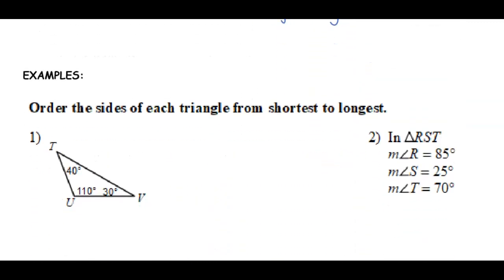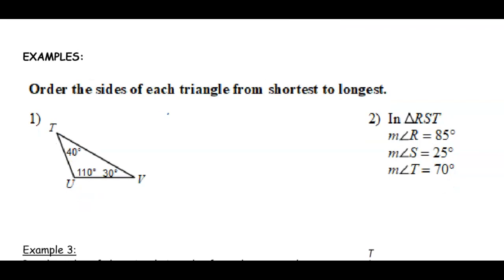Ordering sides of each triangle from shortest to longest — small, medium, large. Angle V is the smallest at 30 degrees, so the side opposite that is the smallest side: segment TU. Then UV is the medium length side. And because 110 is the biggest angle, the side opposite that, TV, is the biggest.